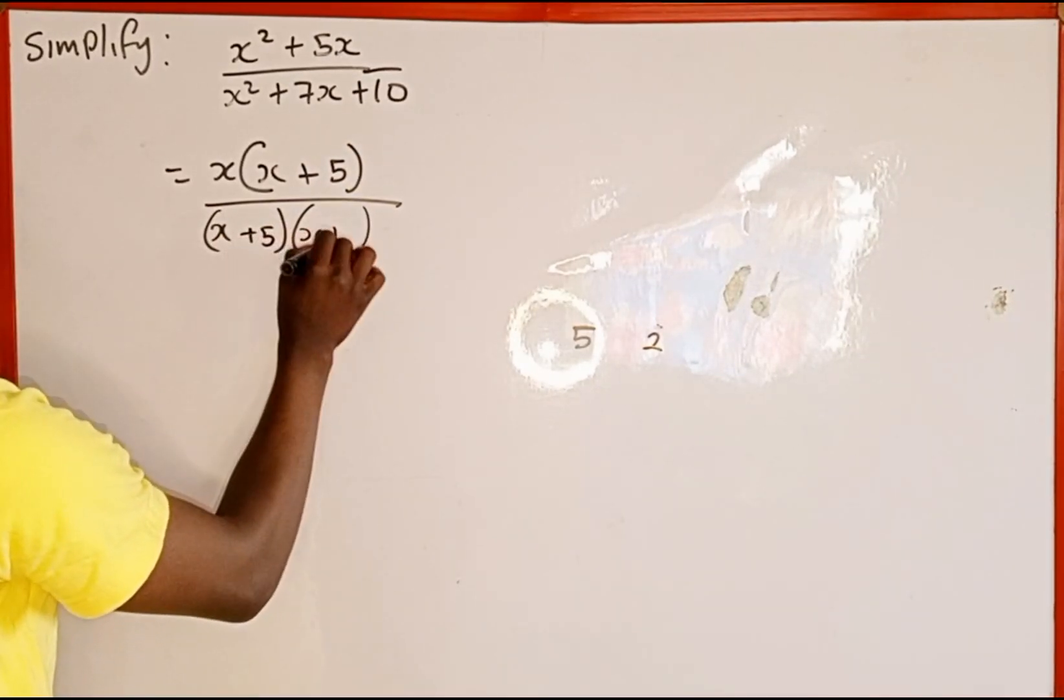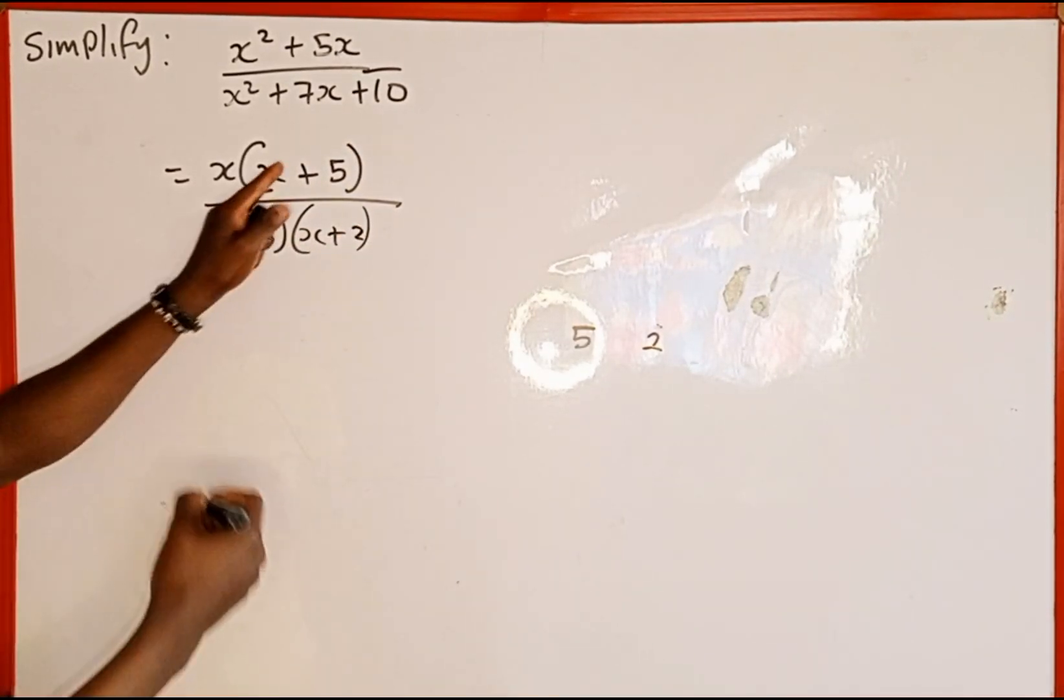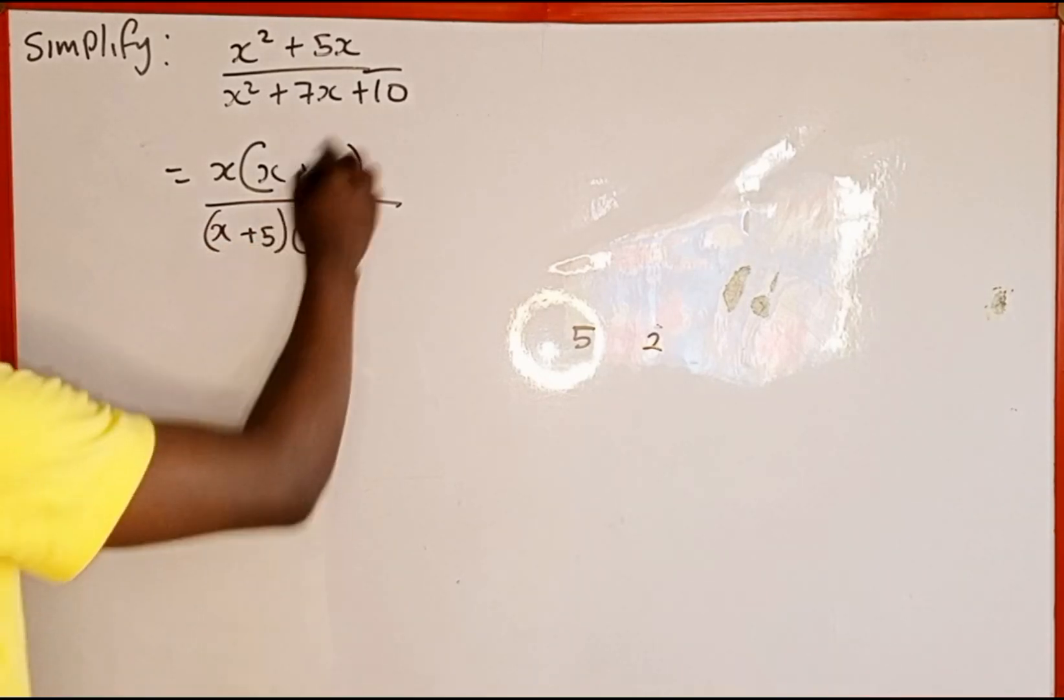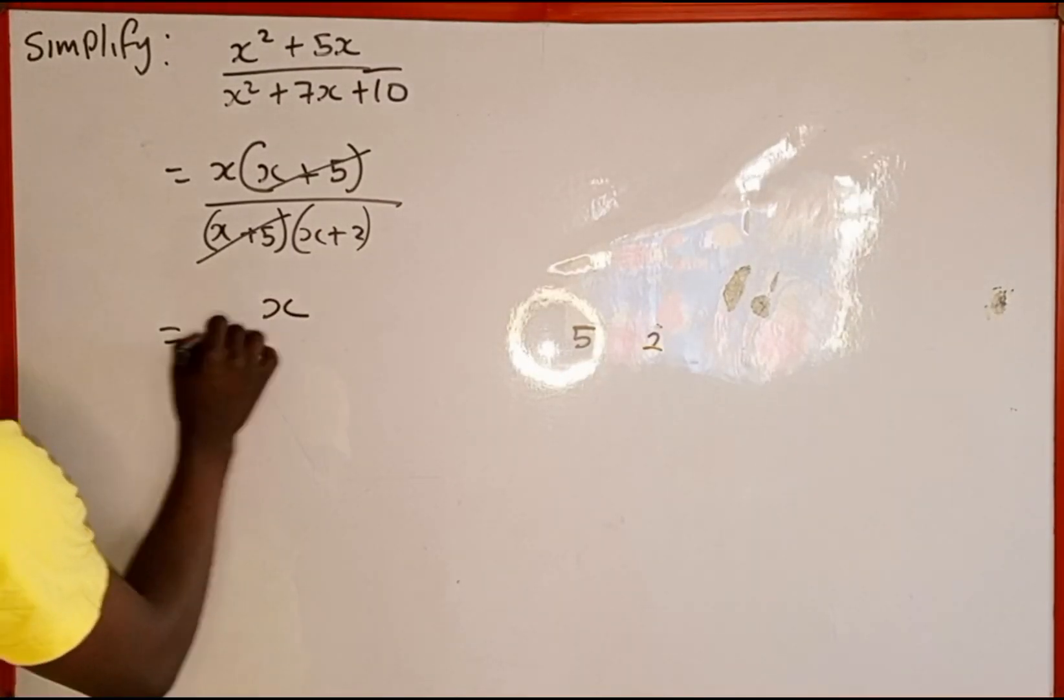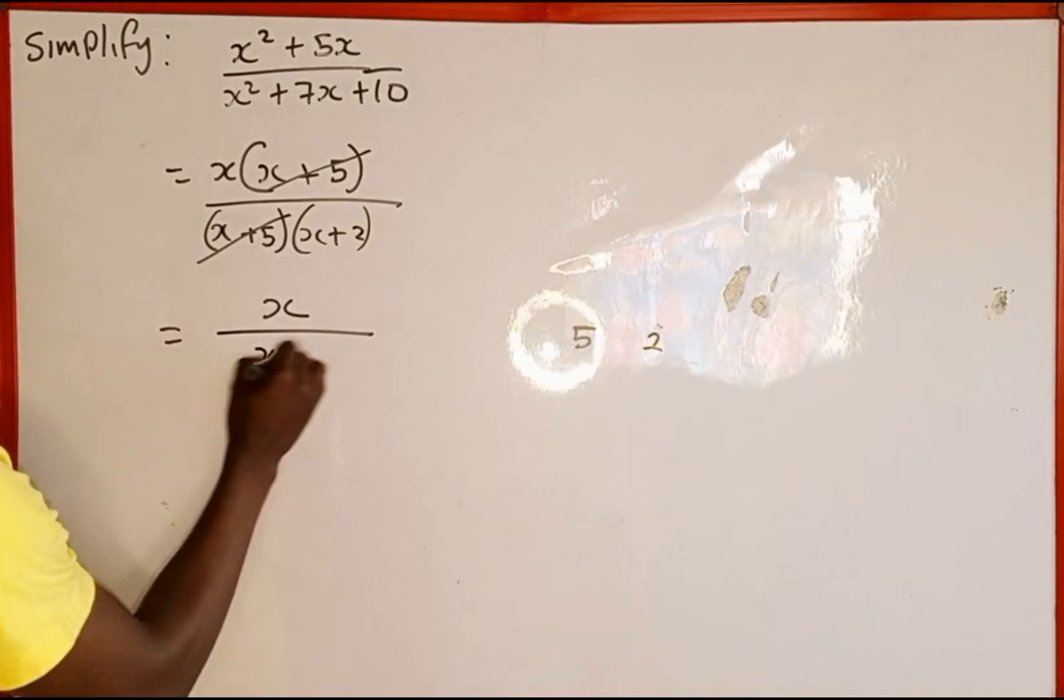So the numbers are positive 5 and positive 2. Now we have x plus 5 here. So this is going to cancel. So we are left with x in the numerator, then divided by x plus 2.